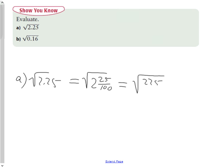We're going to say since the square root of 2.25 is the same thing as the square root of 2 and 25/100ths, which is the same thing as if I convert this to the square root of 225 over 100.